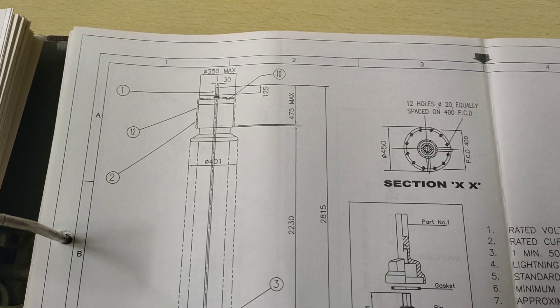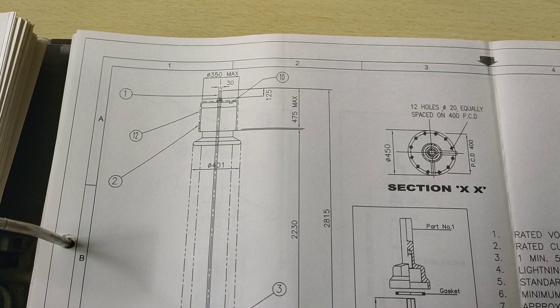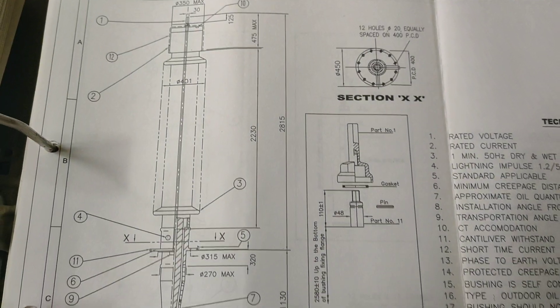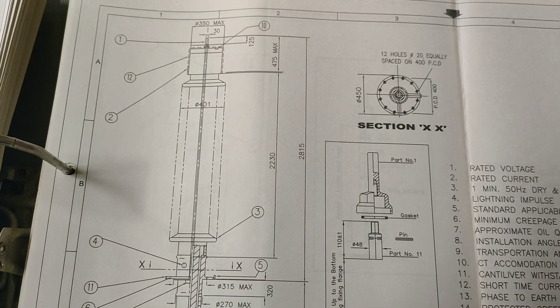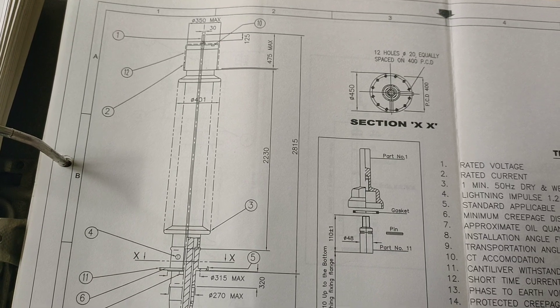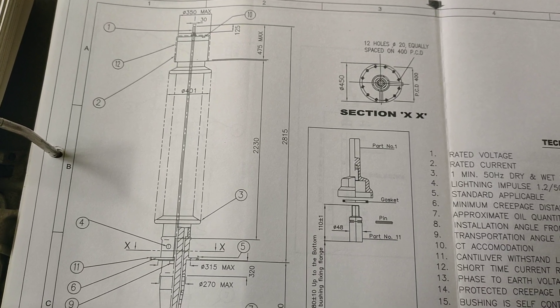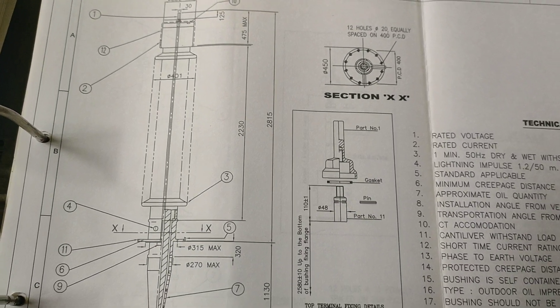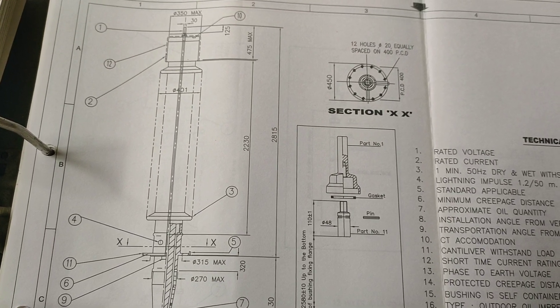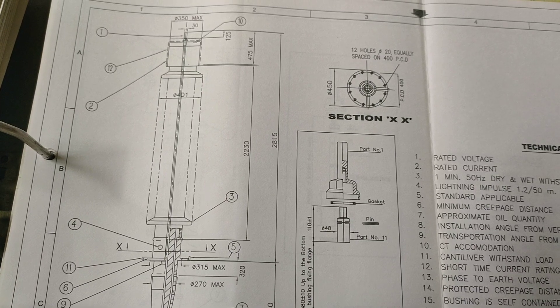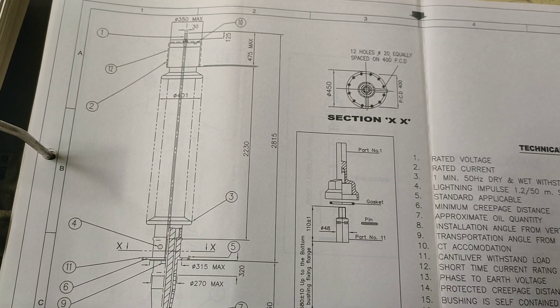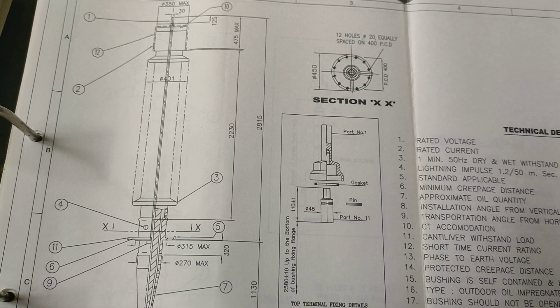Number three is the upper insulating cover. Number four is the measuring tape. Number five is the de-aeration screw. Number six is the flange. Number seven is the lower insulating cover. Number eight is the shield.